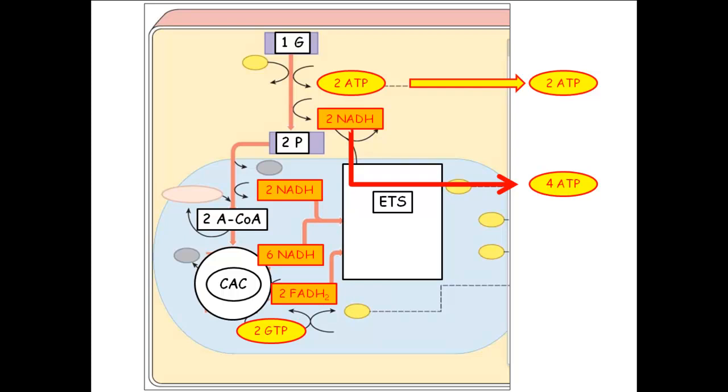For NADHs that are made inside the mitochondria, the NADH drops off how many electrons? Two. And how many protons get pumped? Six. And six come back in and you get how many ATP? Three. For the FADH2s that were made inside the mitochondria, how many ATPs do you get? Two.